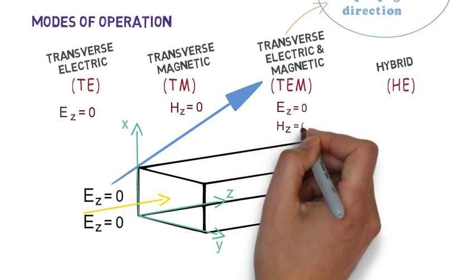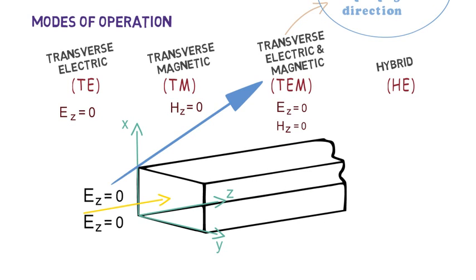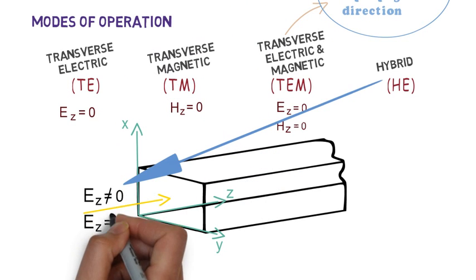In TEM mode none of the fields exist in the wave propagation direction and the last one is hybrid mode in which both the fields along z direction is non-zero.